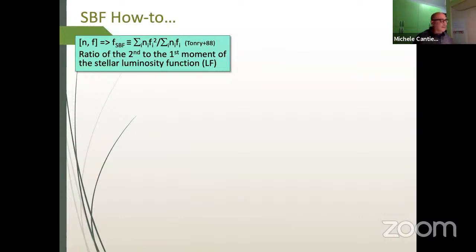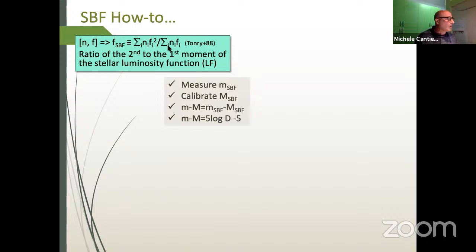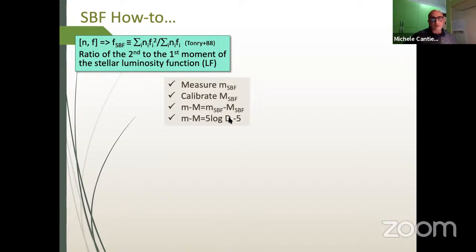Going to the formal definition: Tonry and Schneider in 1988, and then Tonry and collaborators in the 1990s, introduced the SBF as the ratio of the second to the first moment of the stellar luminosity function in the object. Once this quantity is calibrated, it follows the distance modulus in the usual way, from which you can get the distance to the target — common to all standard candles.